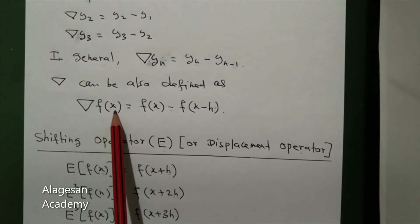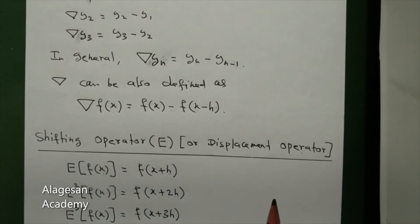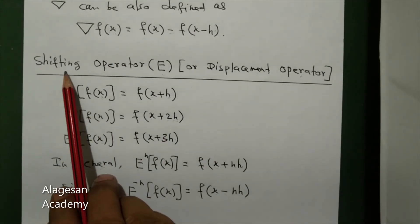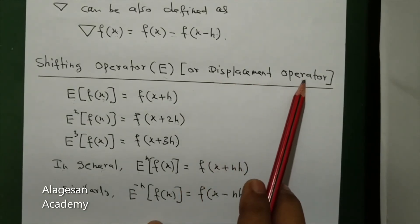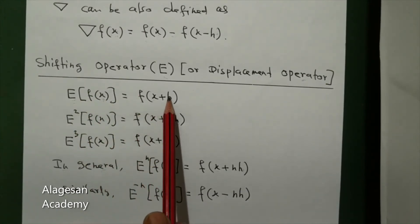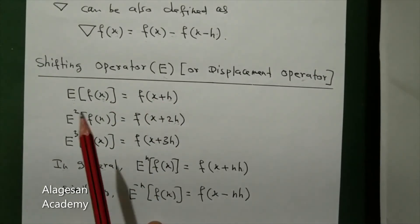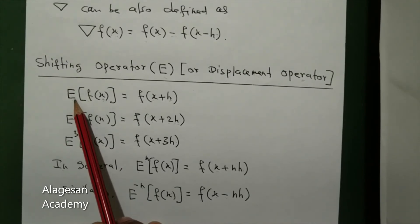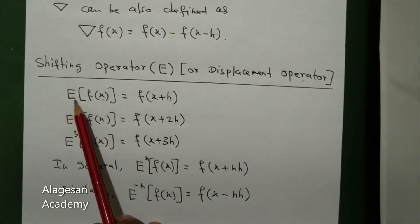Next operator is shifting operator, also called displacement operator. It is denoted by E. E of f of x means f of x, but x is shifted to x plus h. That's why E is shifting operator. F of x becomes f of x plus h.